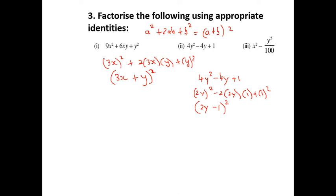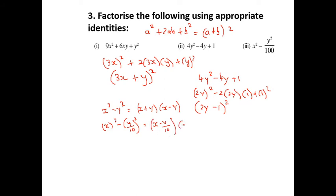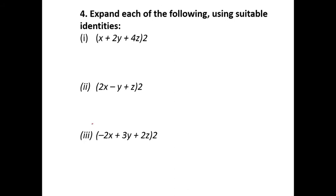Now: A² + 2AB + B² = (A + B)². And for difference of squares: x² − y² = (x + y)(x − y). Applying this: (x − y/10)(x + y/10). These identities are easy — we just need to write the correct identity.